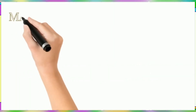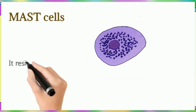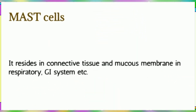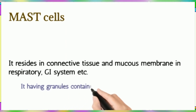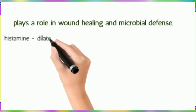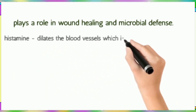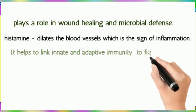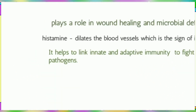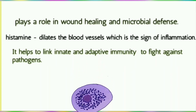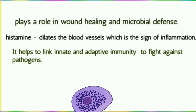Mast cells are the first cells most involved in innate immunity. They are found in connective tissue and mucous membranes of the respiratory and gastrointestinal systems. Mast cells play a role in wound healing and microbial defense. Their granules contain histamine and heparin enzymes. Mast cells are involved in serious allergic reactions like anaphylactic reactions — histamine causes blood vessels to dilate during such reactions.